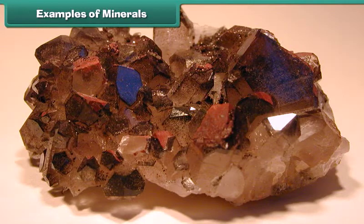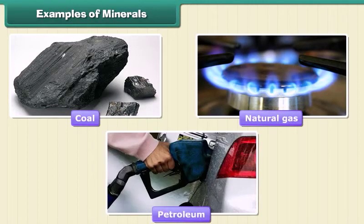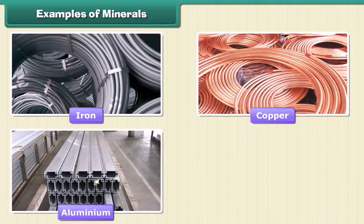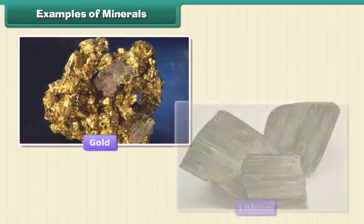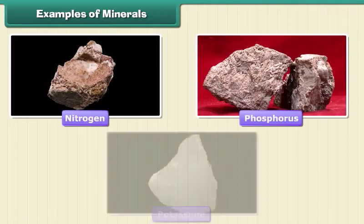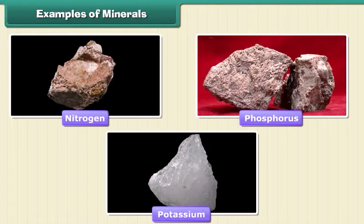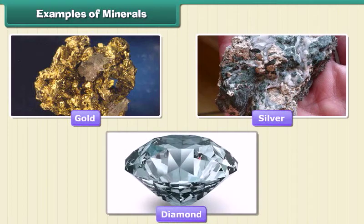Examples of minerals. Minerals are very important to humankind. Some minerals are used as fuels — for example, coal, natural gas, and petroleum. Some are used in industries, like iron, copper, aluminium, and platinum. Minerals like gold and lithium are used in medicines. Nitrogen, phosphorus, and potassium are used in fertilizers. Gold, silver, and diamond are used in jewelry.